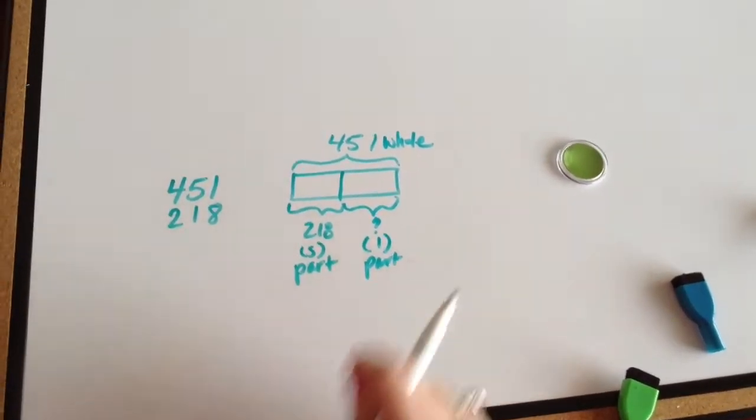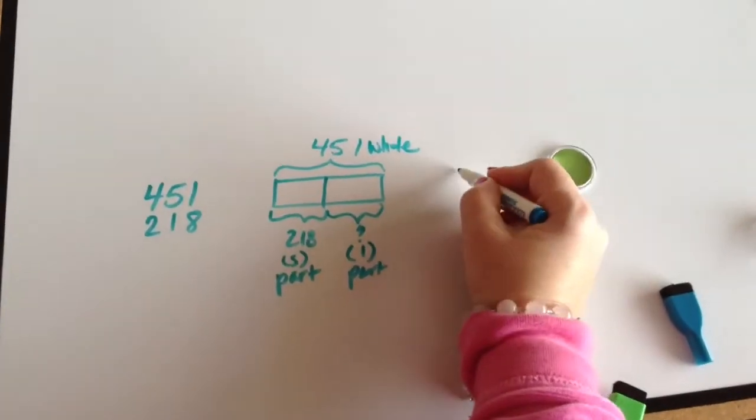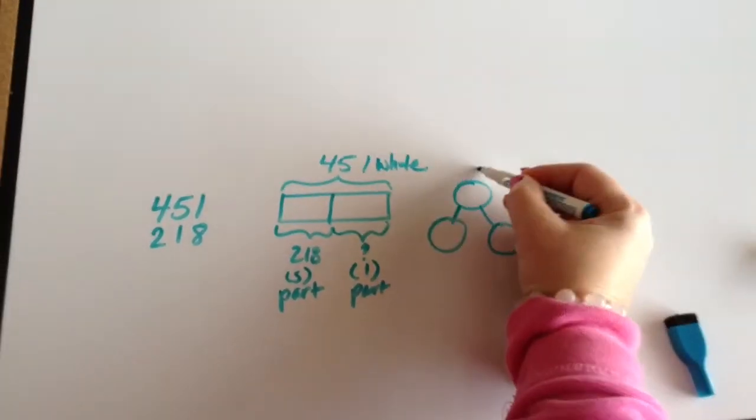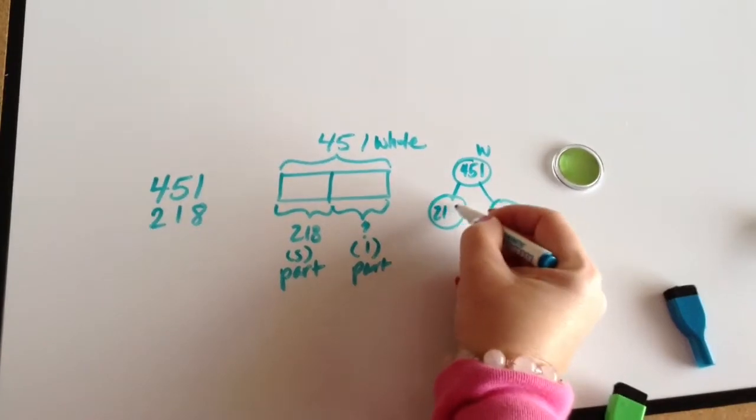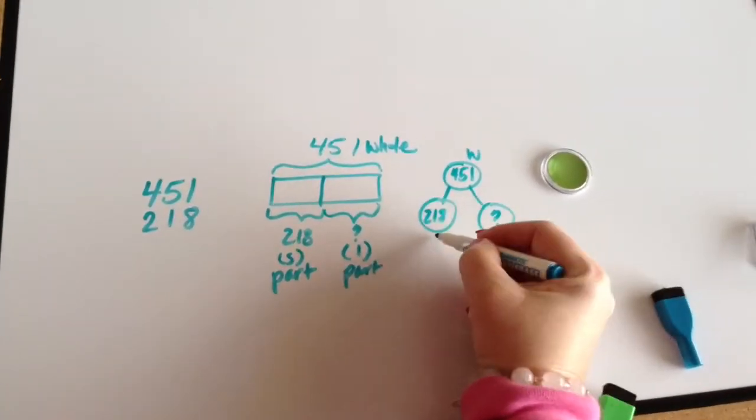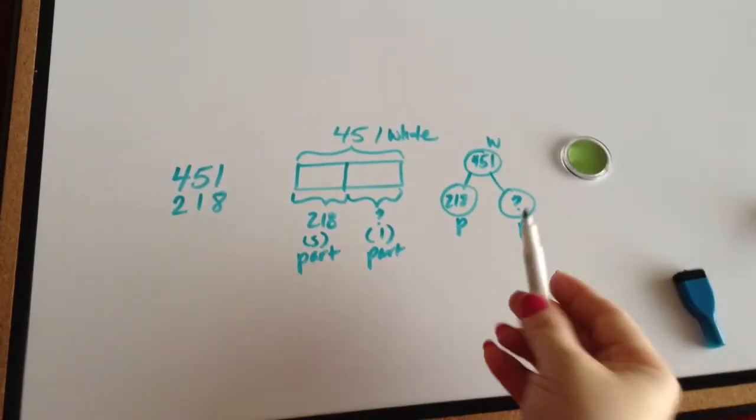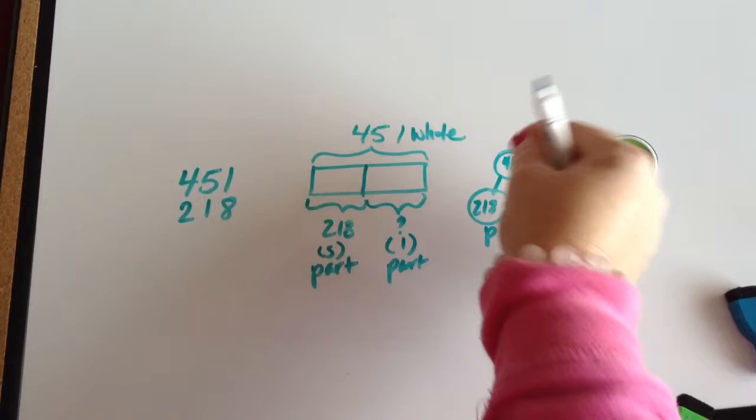That's our question: how many marbles are large? We know in our number bond our whole is 451, we know our part is 218, but we don't know this part. I like to label them. We know that if we bring these two parts together, we'll find our whole, and bringing them together would be adding. But when we don't know a part, it would be the opposite.